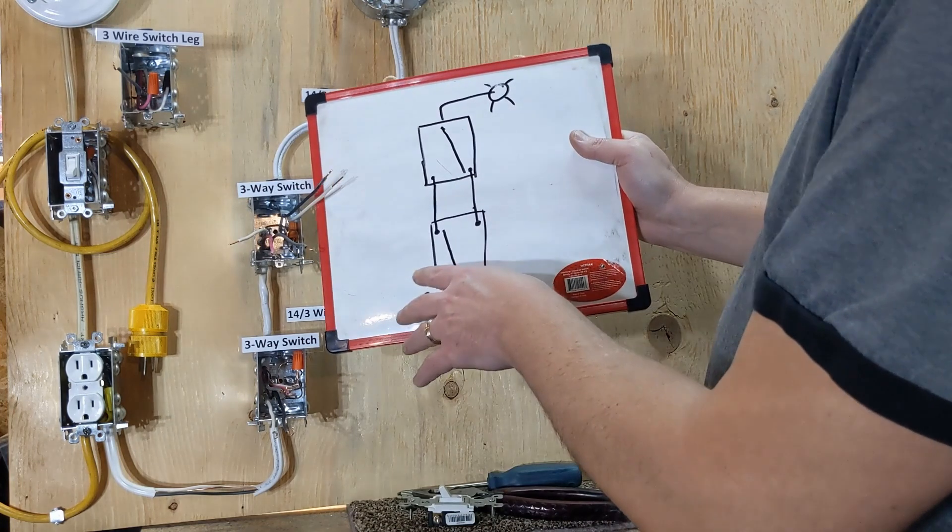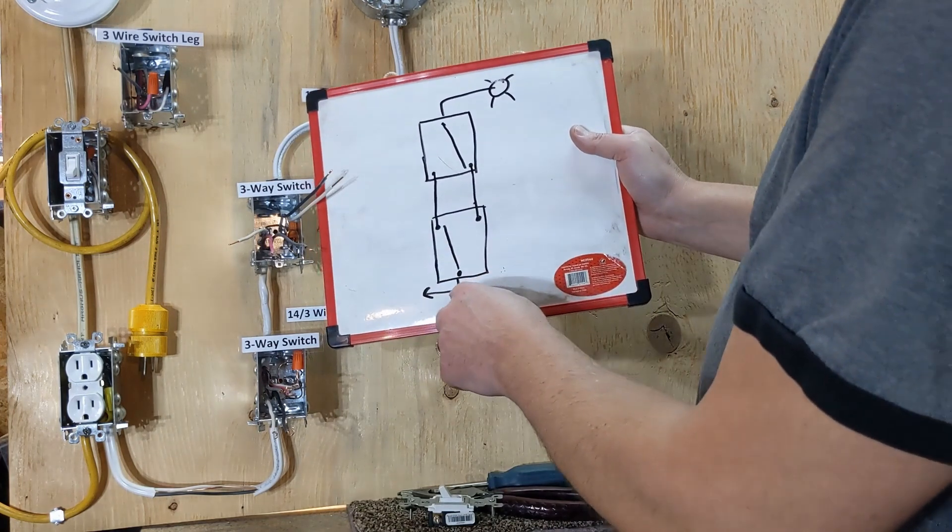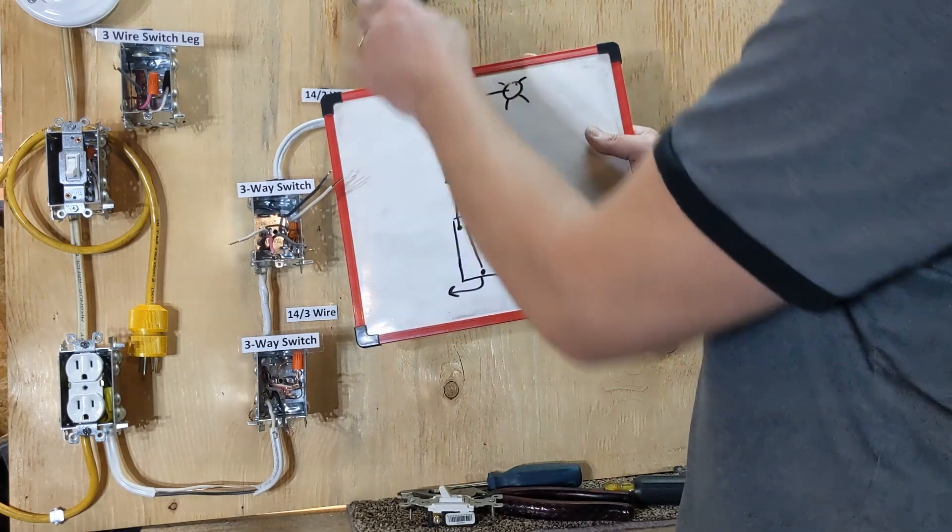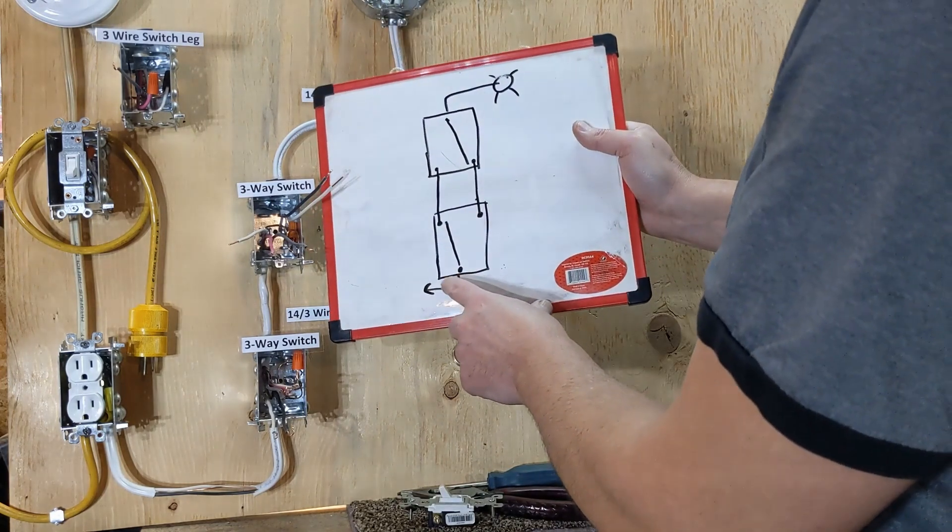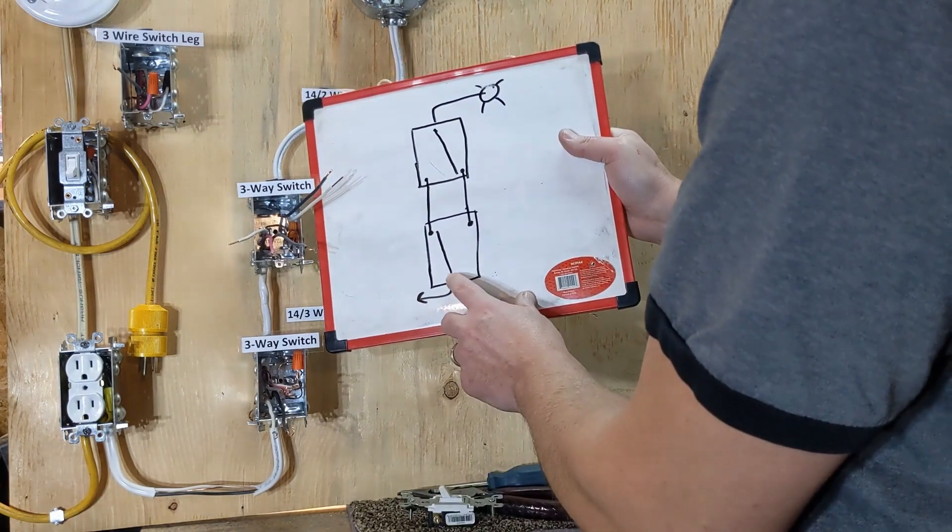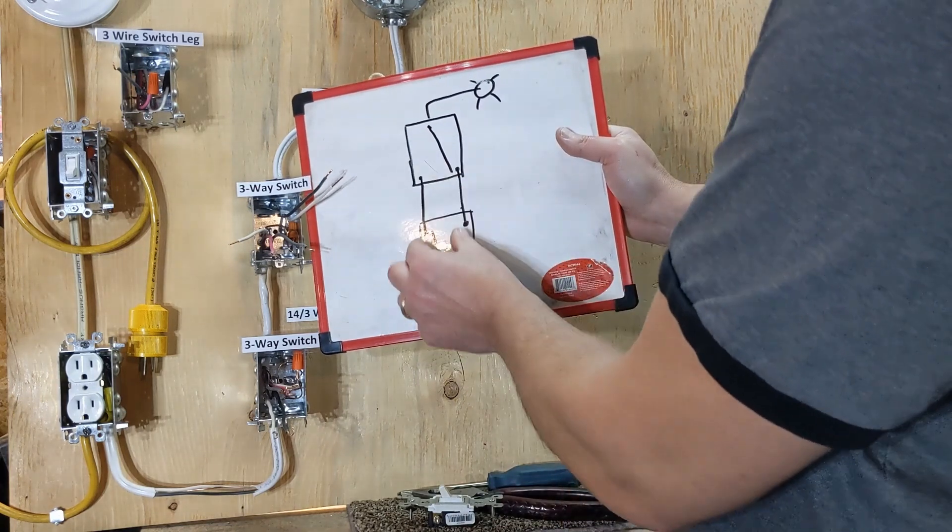The neutral is going to come through and make it all the way up to the light. So the hot comes in on a three-way and gets switched to two travelers.